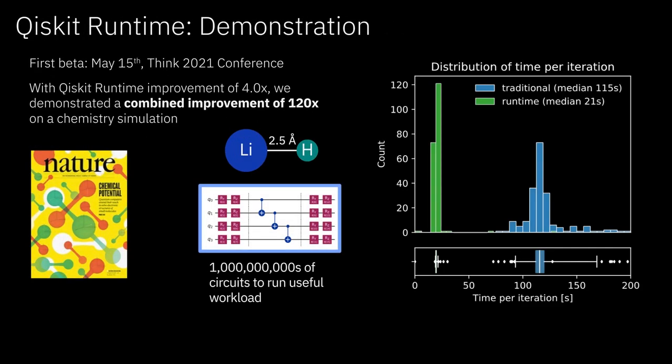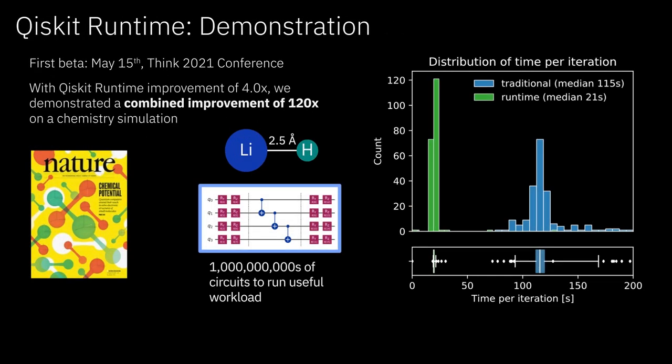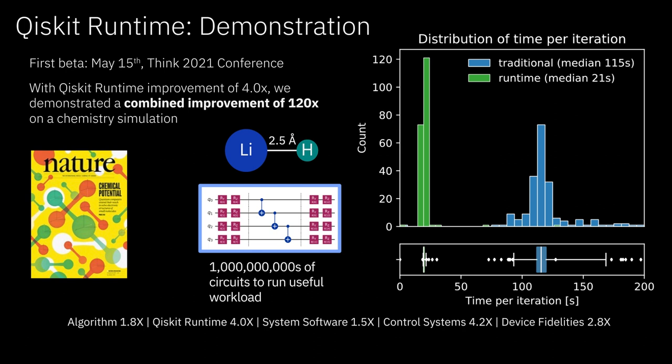You can directly observe the impact of the Qiskit Runtime in the figure on the right-hand side of your screen, which shows iteration trip times in a variational algorithm. The circuit model API times are shown in blue and the Qiskit Runtime is shown in green. You can see that we take what is almost a two-minute round-trip time down to just about 20 seconds — a little over a 4x increase in speed from the Qiskit Runtime alone.